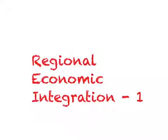Let us start a new topic called regional economic integration. To understand this, consider the following: we live in the US, and I live in a state called Kansas, which is surrounded by other states like Oklahoma, Missouri, Arkansas, and so on. Suppose instead of having these independent states, we had independent countries — like the country of Kansas, the country of Oklahoma — and whenever you move across countries you need documents like a passport and visa.